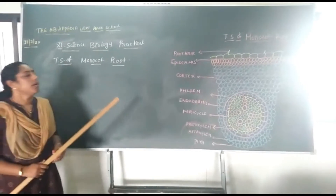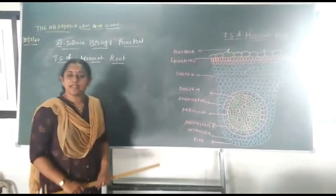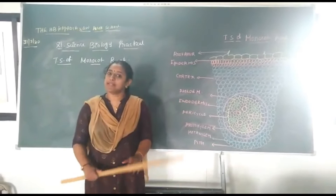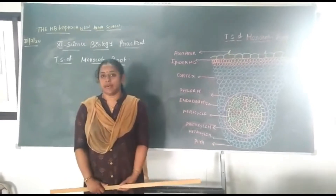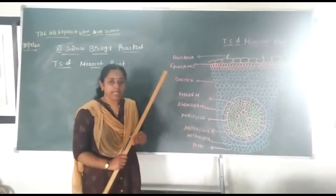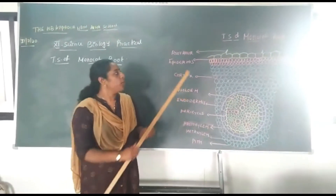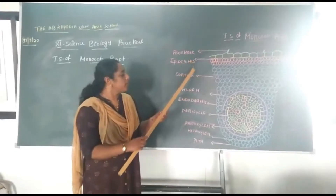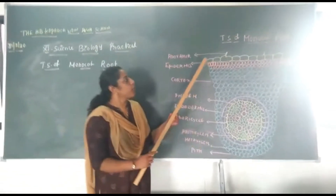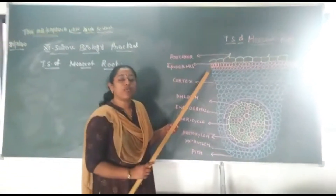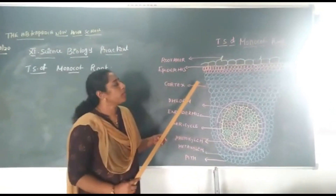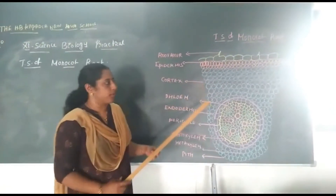TES means transverse section and it is normally circular in outline. When you take TES of Monocot Root you will get the following anatomy. I am going to tell you about the anatomy of TES of Monocot Root.